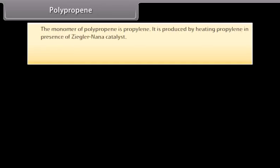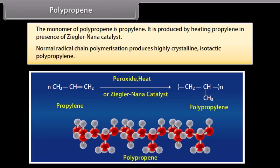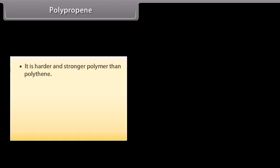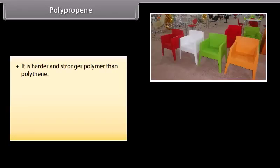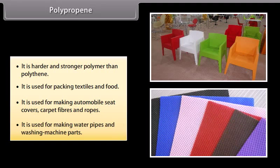The monomer of polypropene is propylene. It is produced by heating propylene in presence of Ziegler-Natta catalyst. Normal radical chain polymerization produces highly crystalline isotactic polypropylene, which is harder and stronger than polythene. It is used for packing textiles and food, making automobile seat covers, carpet fibers, ropes, water pipes and washing machine parts.